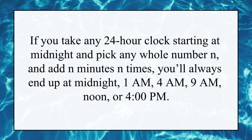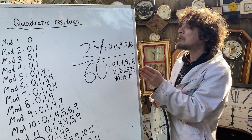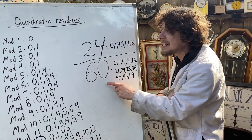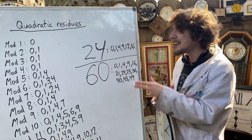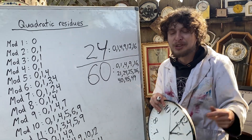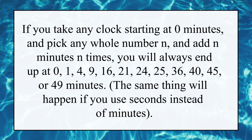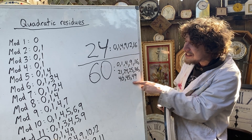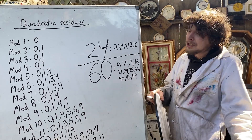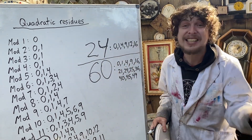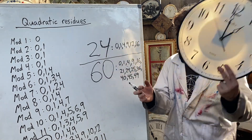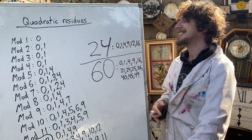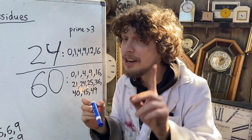And if you played a similar game with minutes or seconds — adding a certain amount of minutes to a clock that started with the hand at zero minutes — out of all the options you could pick, it would have to end up on one of these amounts of minutes. Same thing if you played the game with seconds, because 60 is kind of on clocks twice.